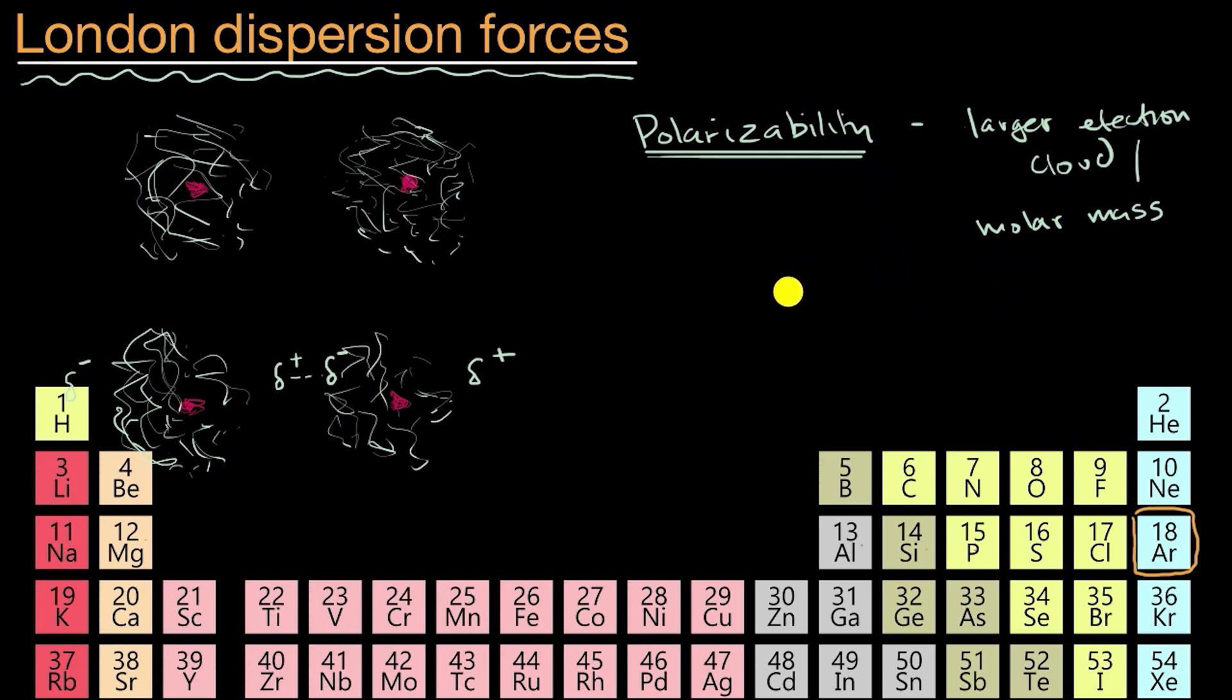And you can actually see that in their boiling points. For example, the boiling point of helium is quite low. It is negative 268.9 degrees Celsius, while the boiling point of argon, it's still at a low temperature by our standards, but it's a much higher temperature than the boiling point for helium. It's at negative 185.8 degrees Celsius.